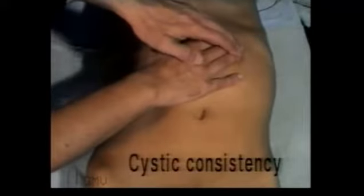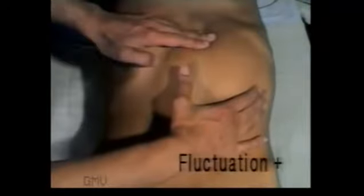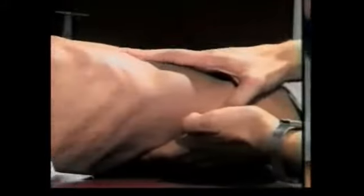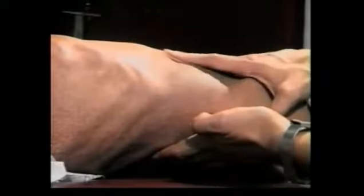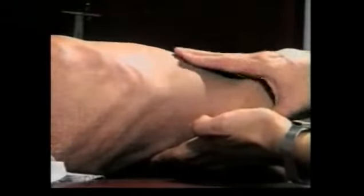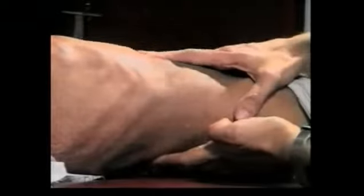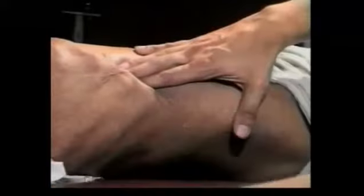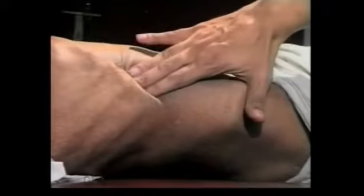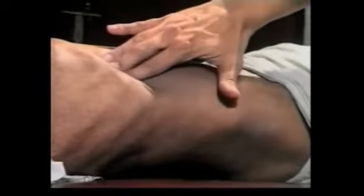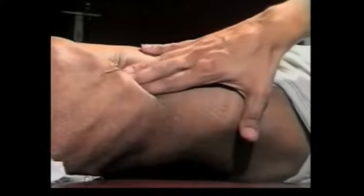If the swelling is cystic, test for fluctuation and fluid thrill. If the swelling is in the lumbar region, palpate bimanually to feel the exact size and consistency by feeling it between the two hands. If the swelling is in the right or left hypochondrium, check whether it extends under the costal margins and whether the fingers can be insinuated between it and the costal margin. Note how fingers can be insinuated between the right costal margin and a right renal lump.